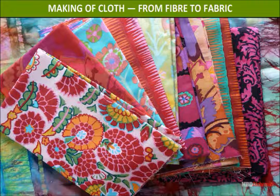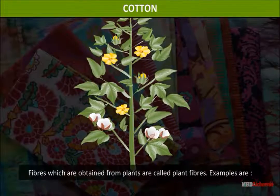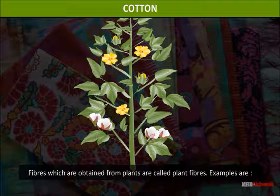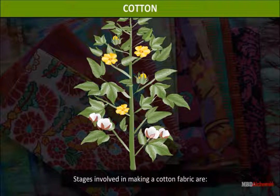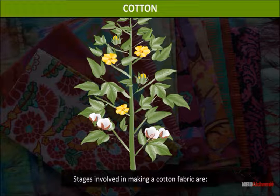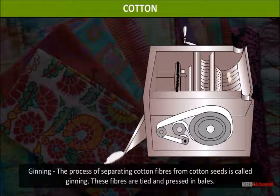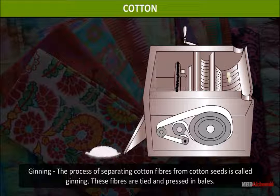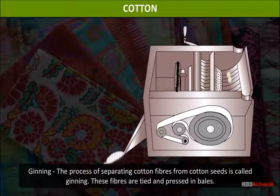Making cloth from fiber to fabric — Cotton: Cotton is a soft fiber which grows around the seeds of a cotton plant. Clothes made of cotton are durable and suitable for all kinds of weather. The first stage in making a cotton fabric is ginning — the process of separating cotton fibers from cotton seeds. These fibers are then tied and pressed into bales.